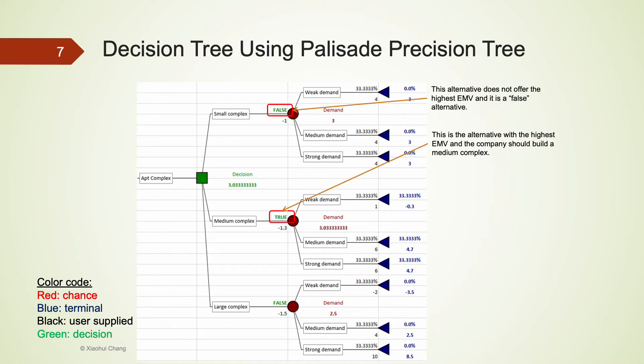The optimal alternative is actually labeled using True on its path while all other alternatives are marked using False. For example, building Medium Complex is the best action to take because it has a higher EMV as we discussed earlier.